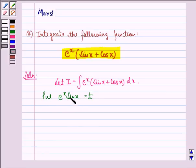Now differentiating with respect to x, we apply the product rule. So that will be e^x cos x + sin x · e^x = dt/dx.